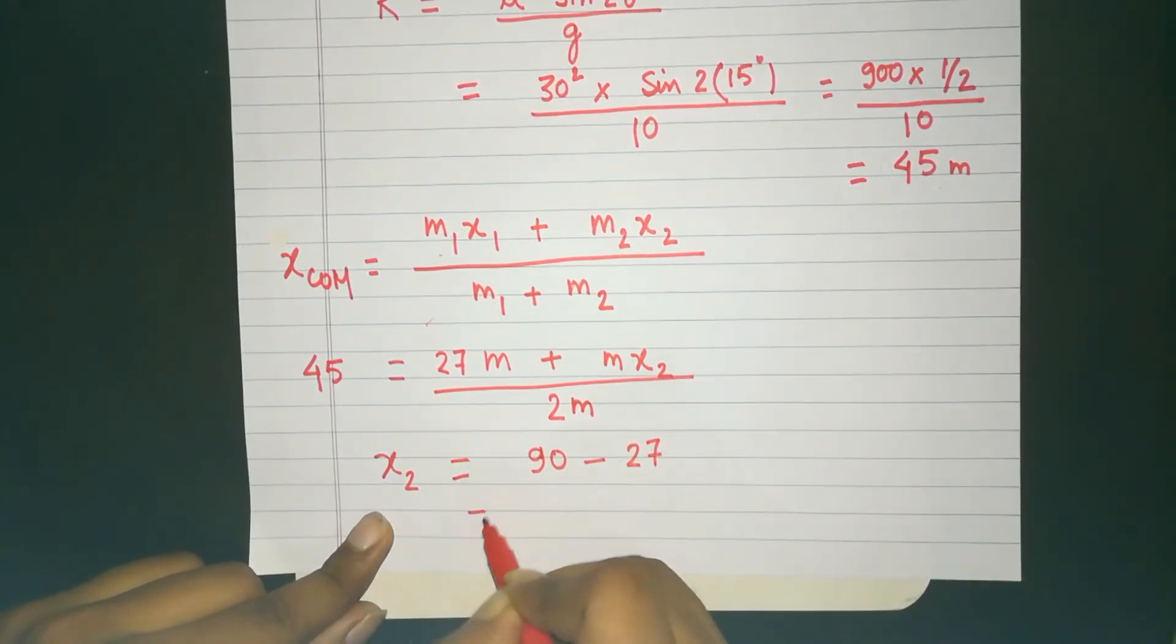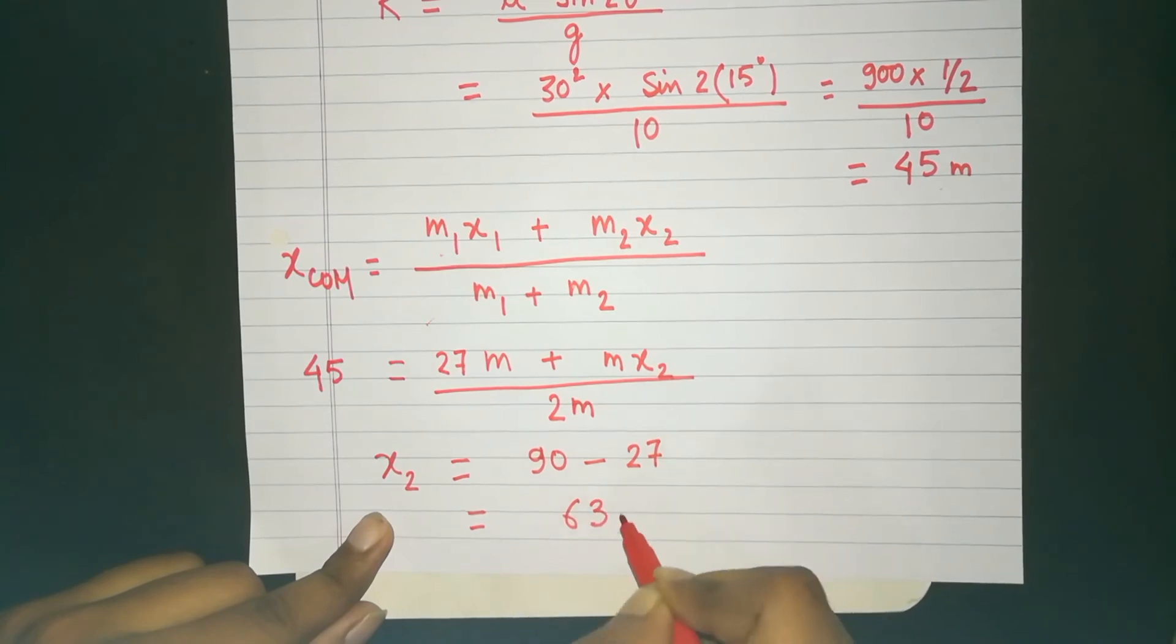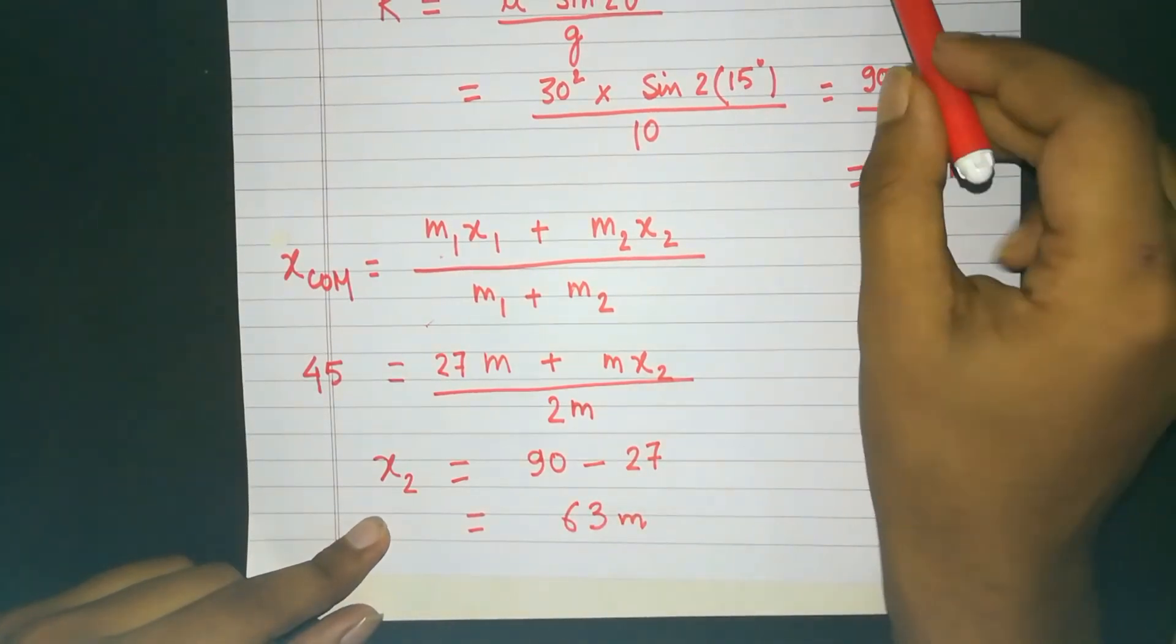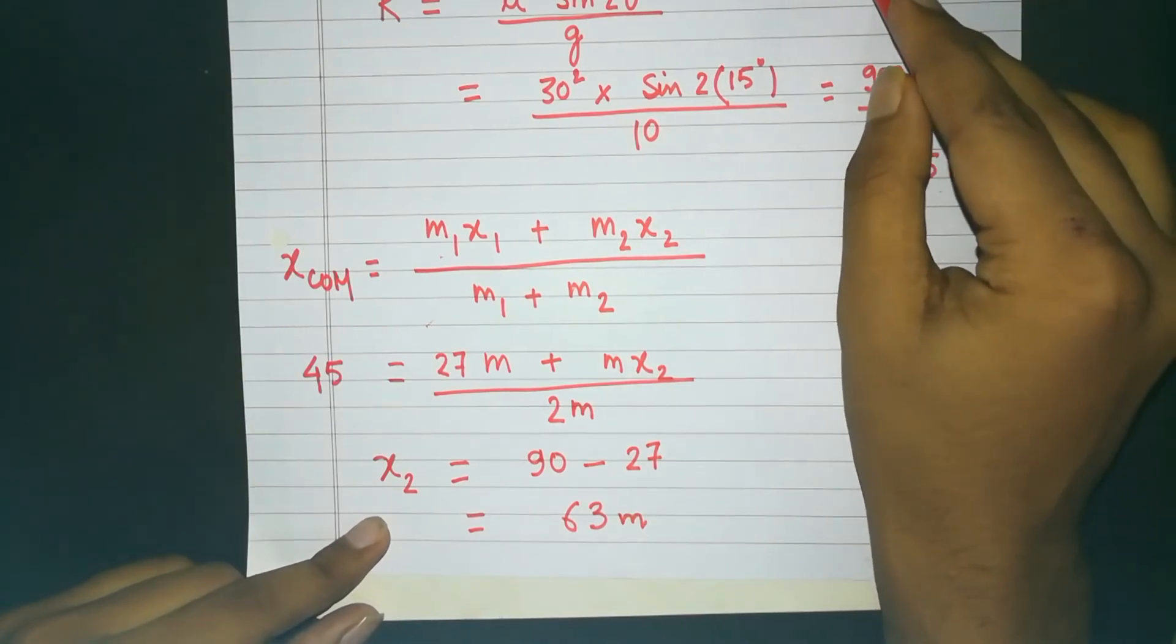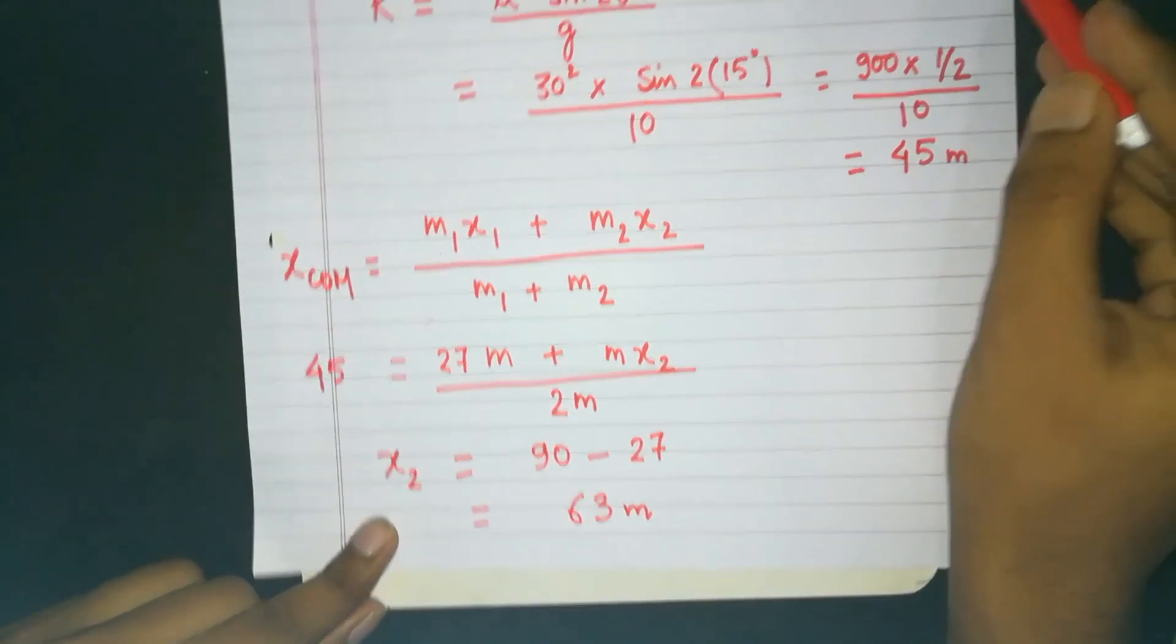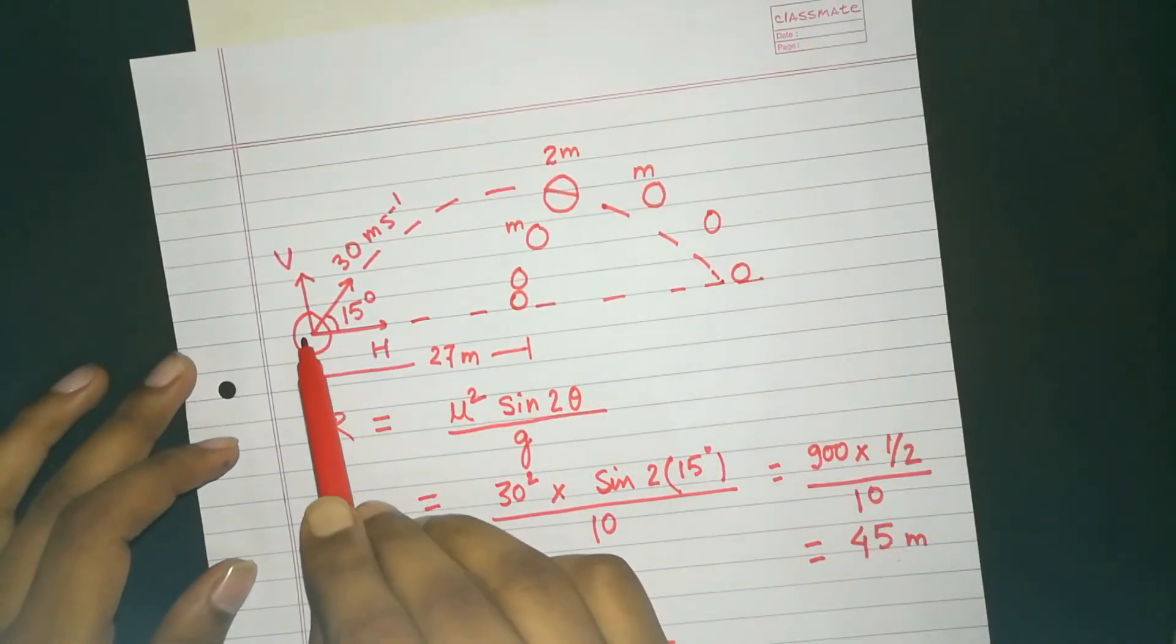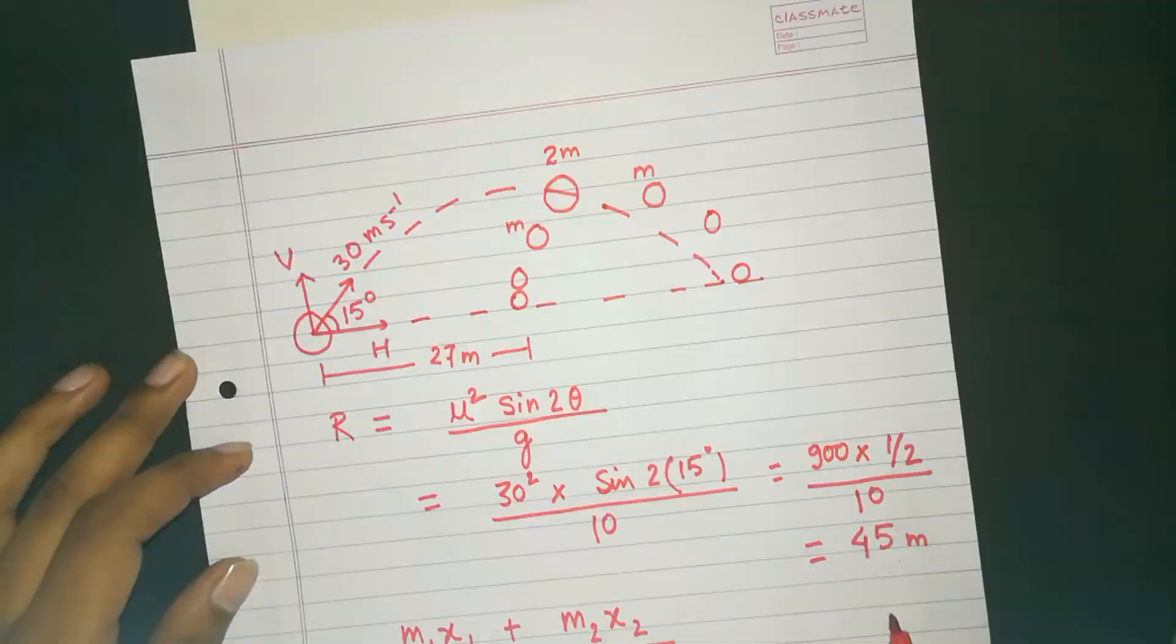It becomes negative. It is equal to 63 meters. So what we get here is that the position of the other particle is 63 meters from the starting point. 63 meters is our one solution for the problem. But thinking carefully, you may find that there's one more possibility for the other particle.